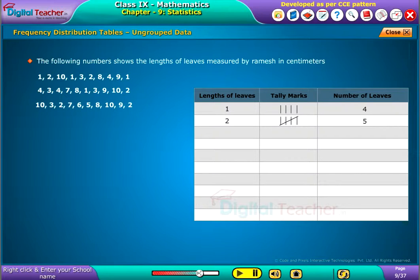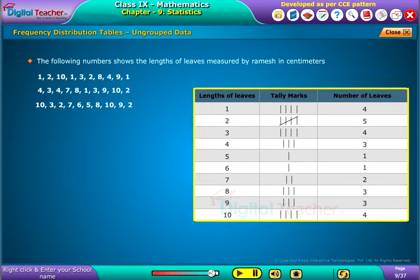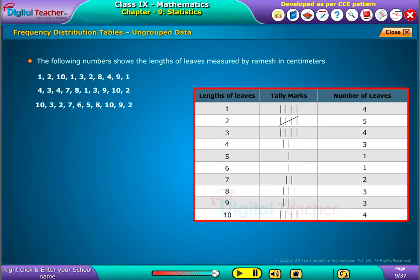Similarly, the remaining measured lengths of leaves of the oak tree are shown in the table. The tally marks are useful in tabulating the raw data. As the actual observations of the data are shown in the table with their frequencies, this table is known as ungrouped frequency distribution.